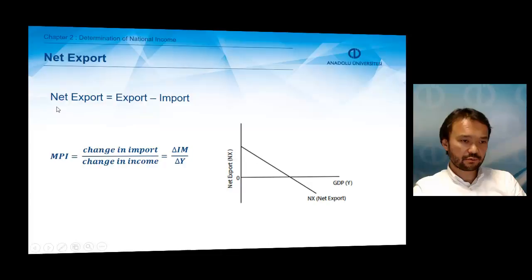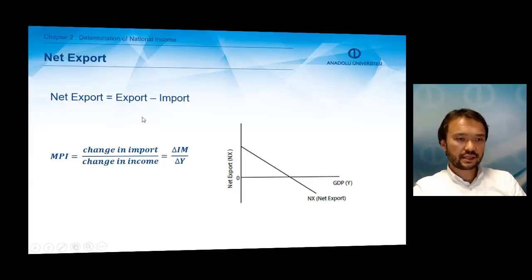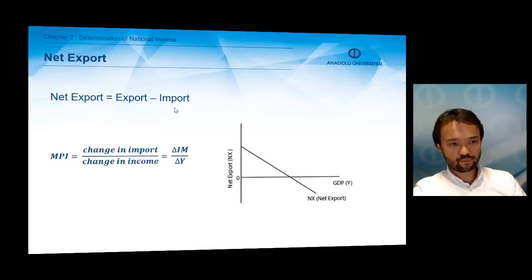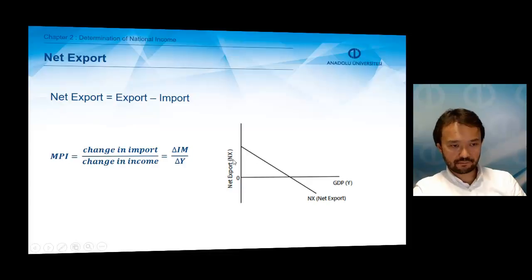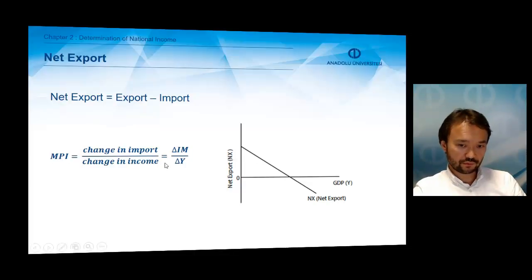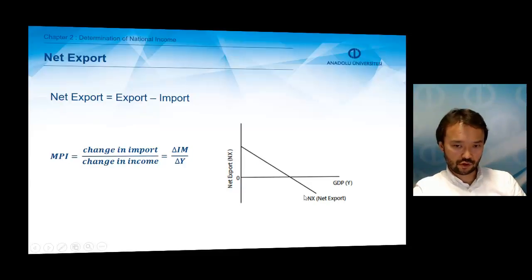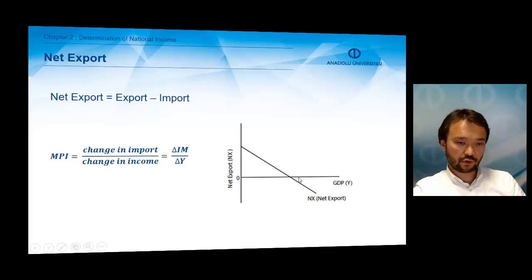Net exports show the difference between exports and imports. There is no relationship between exports and the home country's income level, but imports are related to our income. Because of that, we need the marginal propensity to import, which shows the ratio of the change in imports to the change in income. When our income changes, our imports also change, which is why we have a negatively sloped net export curve.